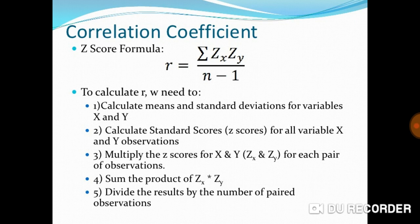Correlation coefficient, Z-score formula. You see, this is the Z-score formula. To calculate r, we need to: 1) Calculate means and standard deviations for variables X and Y.